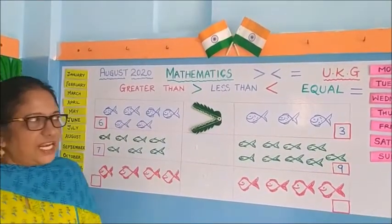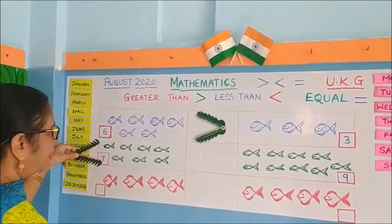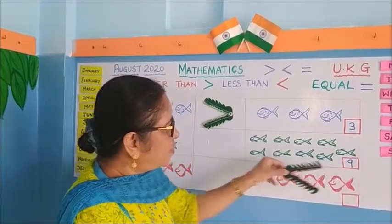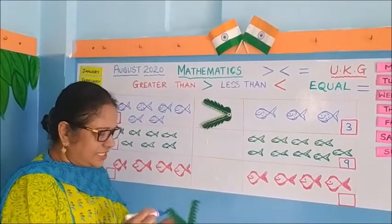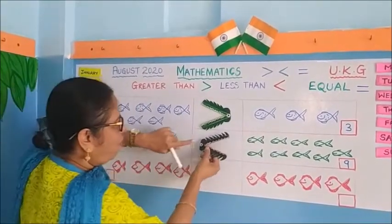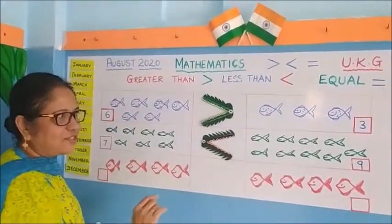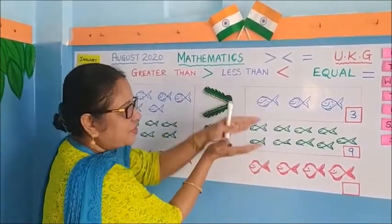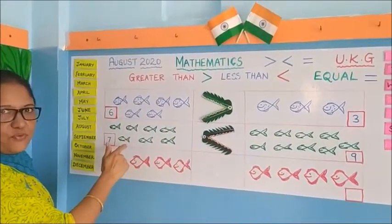Our next alligator is again hungry. It's looking at number seven and then number nine. So which do you think it's going to eat - seven or nine? Yes, it will eat nine, not seven. The alligator goes and eats all the fishes in this tank - nine fishes it wants to eat, not seven. This is greater, so it opens its mouth towards the greater number of fishes, not the lesser number.